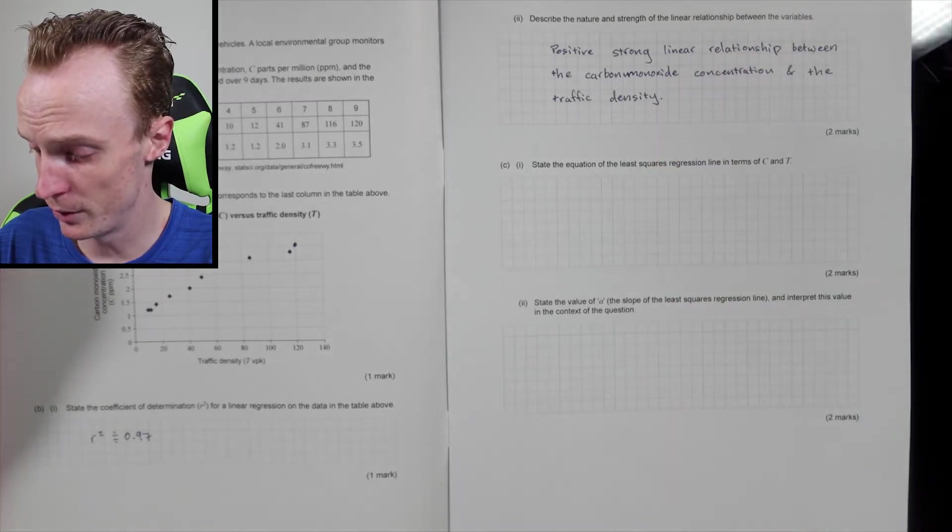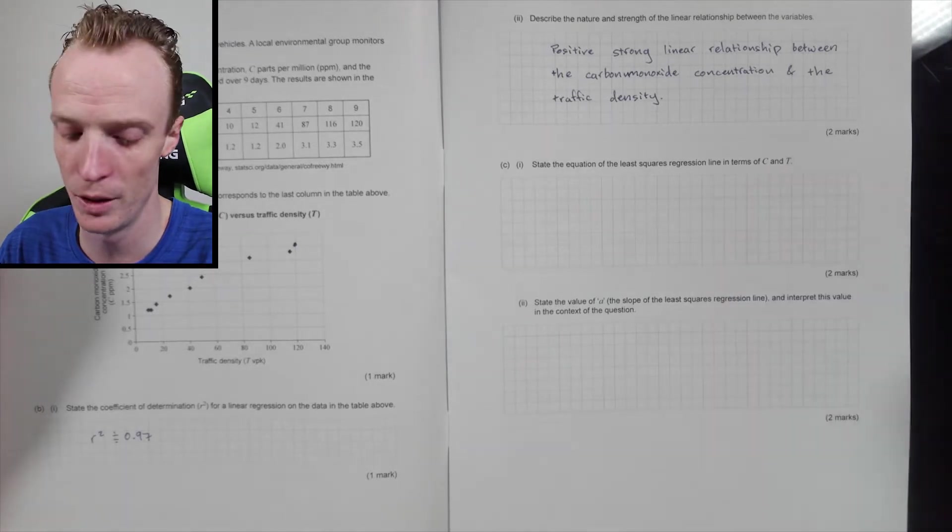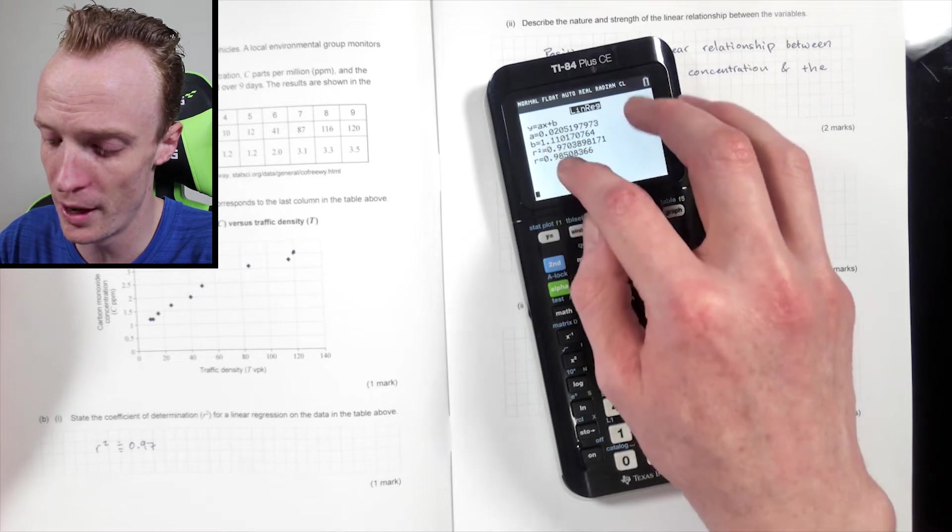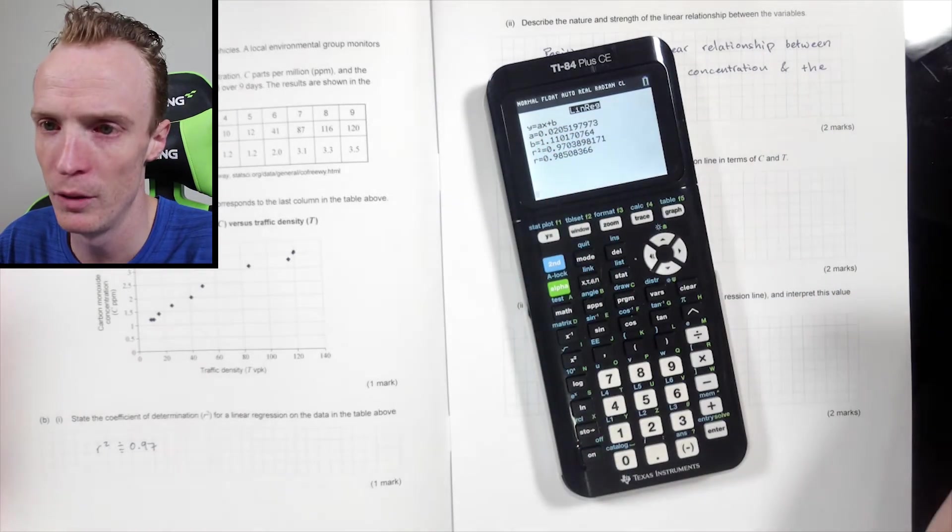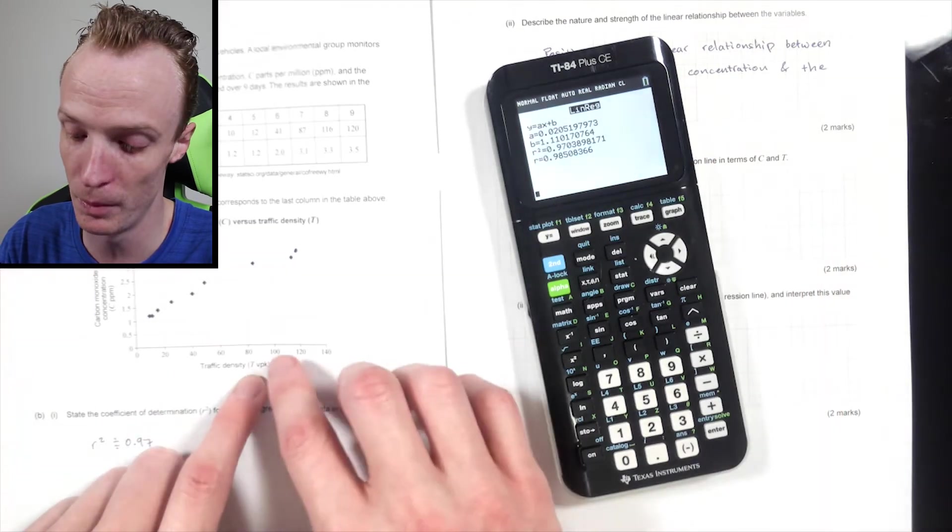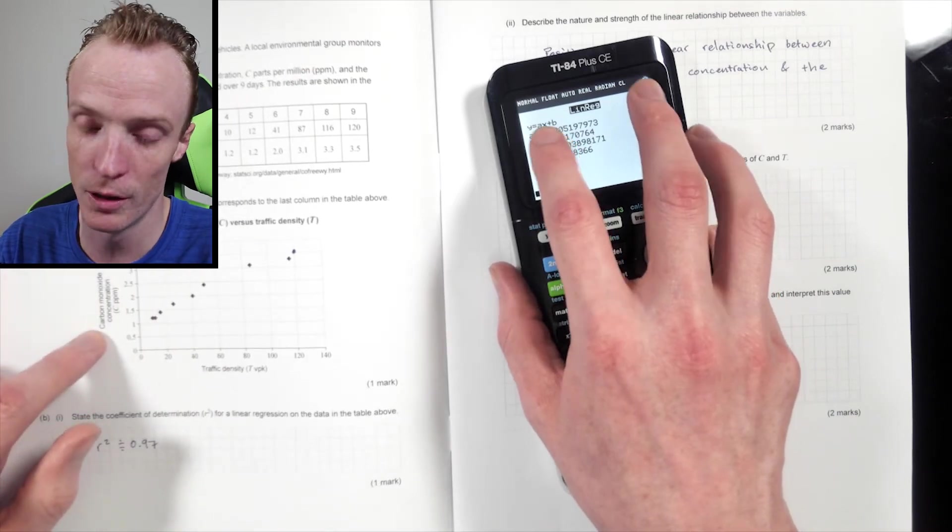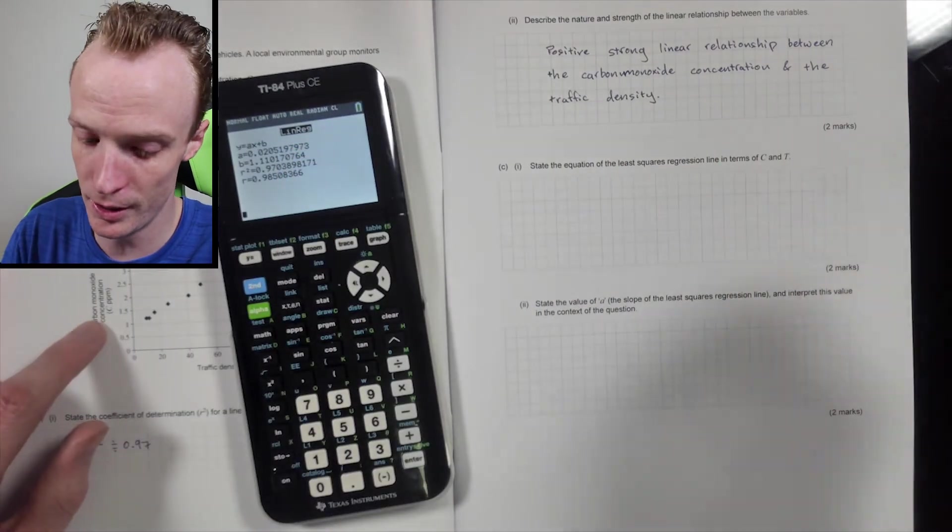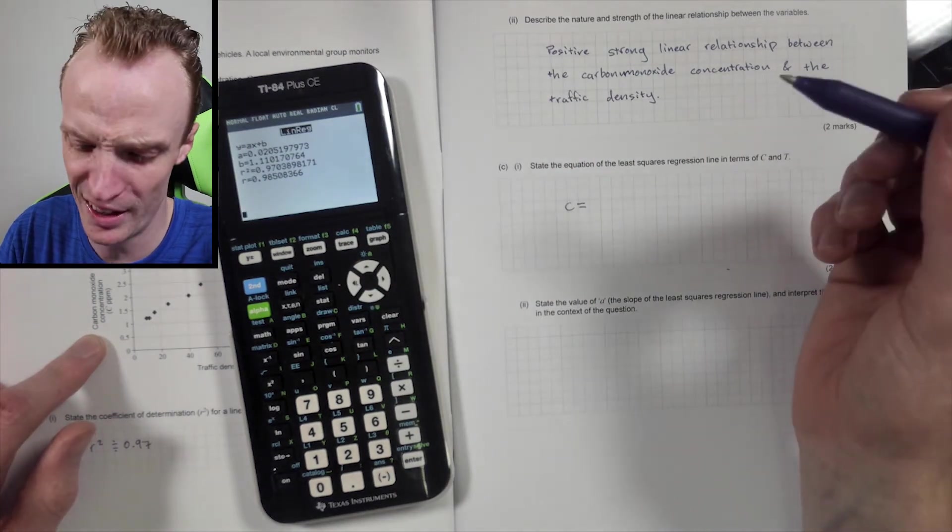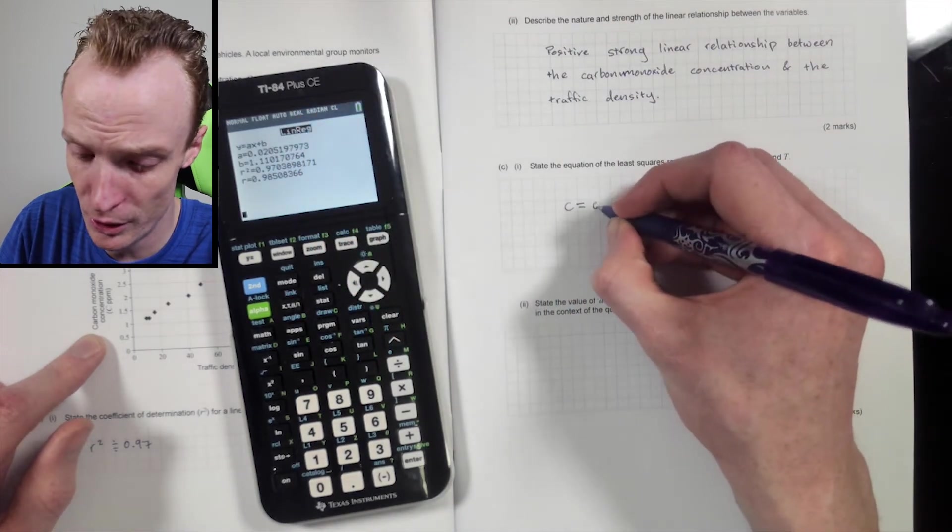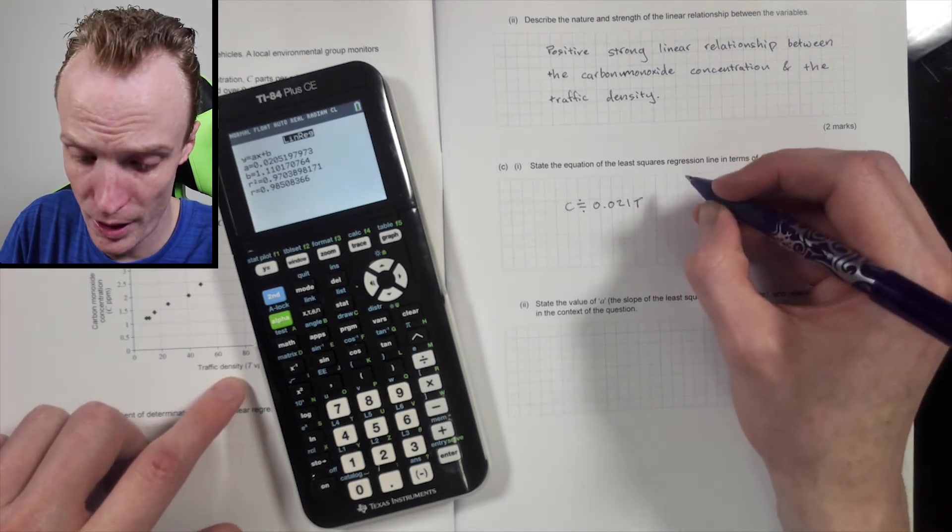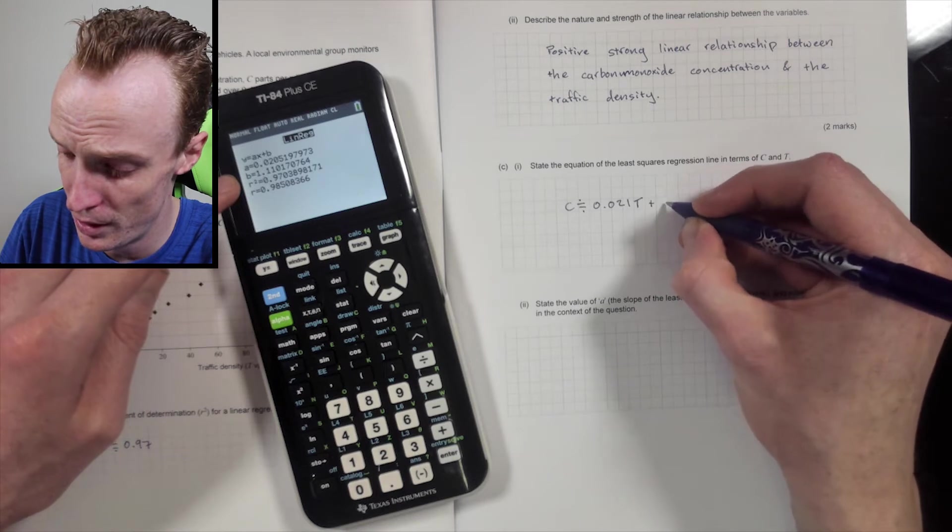All right, state the equation of the least squares regression model in terms of c and t. Now this 'in terms of c and t' is really important. I notice a lot with tests that I mark is people get this model that we've calculated and representing y equals ax plus b, you've got to determine what the y is representing here and what the x is representing. Now my x axis is representing the traffic density, so rather than x I'm going to be putting t, and my y is the carbon monoxide concentration, so rather than y I'll be putting c. So when I do this, I notice that it's my c is equal to the a value, so 0.021, I'm going to put approximately, and then t, and then add my b. My b was 1.11, so add 1.11.